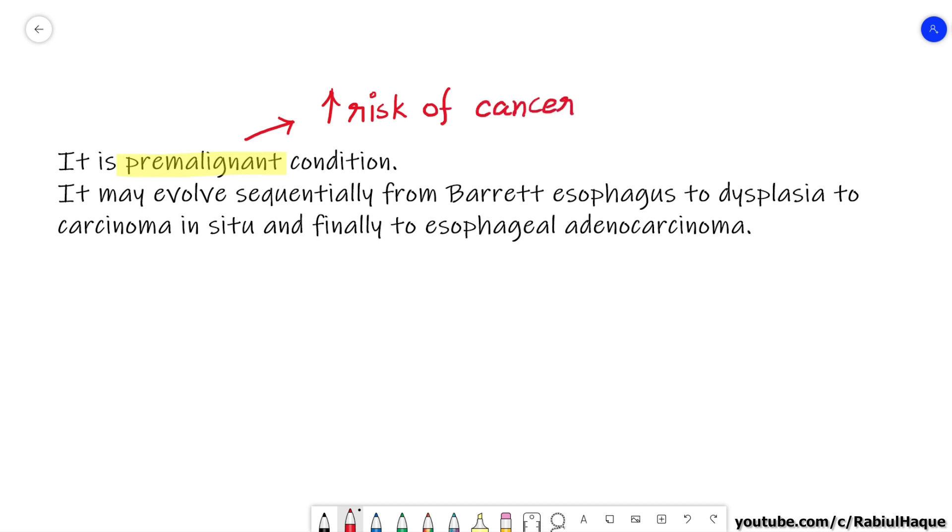So always remember Barrett esophagus is a pre-malignant condition and it can evolve. So first there will be Barrett esophagus, there is columnar metaplasia and goblet cells, and then there will be dysplasia among these cells. And if this condition persists there will be carcinoma in situ, that is still confined in the mucosa, and ultimately when there is invasion there will be full-fledged esophageal adenocarcinoma. So that's why Barrett esophagus is called pre-malignant condition and the sequence is: first there is Barrett esophagus, then there is dysplasia, then carcinoma in situ, and finally there is esophageal adenocarcinoma.